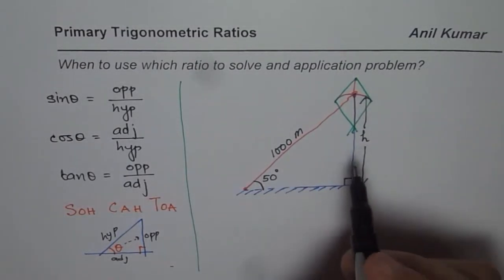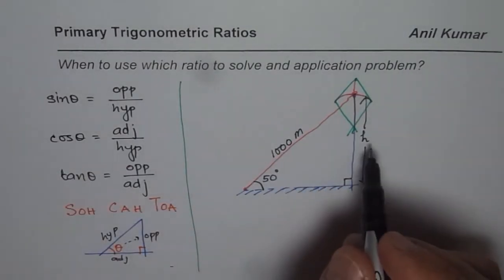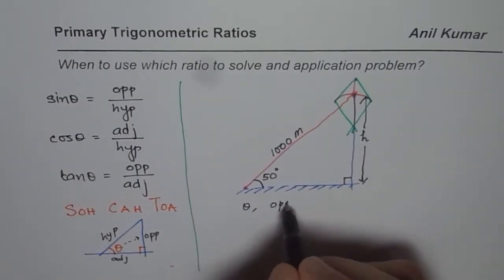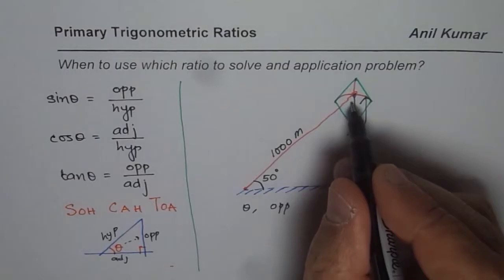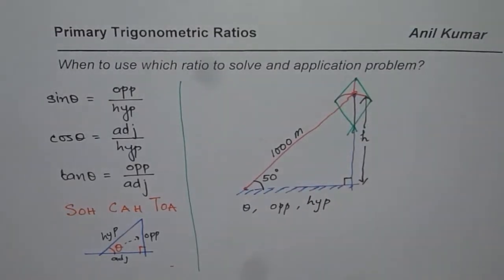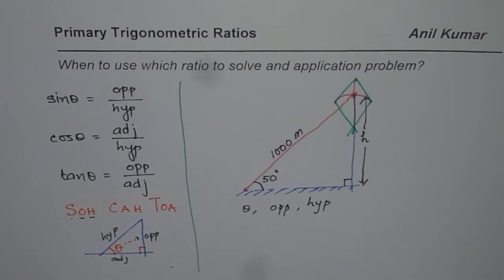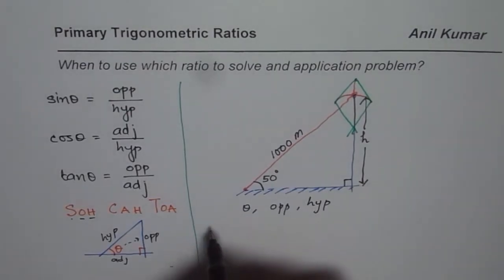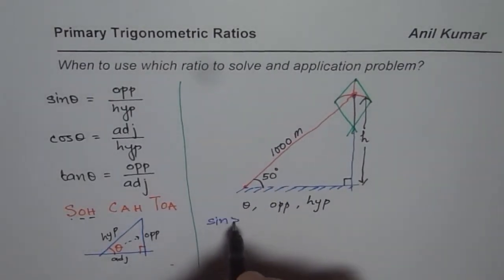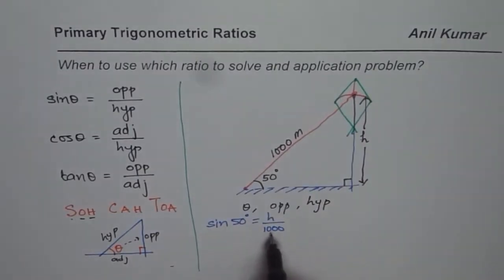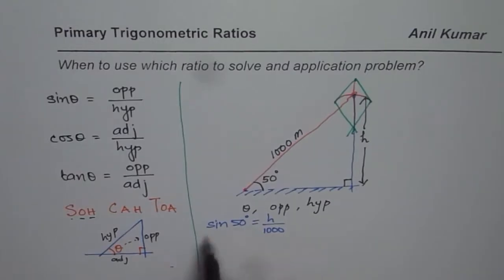If we want to find the height, we look at the ratio to use. With reference to angle theta, we want to know the opposite side and we know the hypotenuse. Since opposite side and hypotenuse are involved, we should use sine. So sine of 50 degrees equals height over 1000. Cross-multiplying gives us the height.